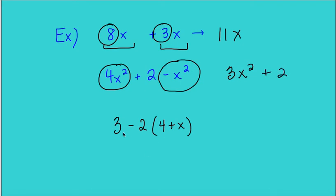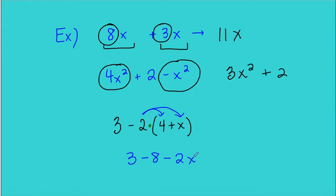Here I've got to use the distributive property first, because this is being multiplied — I have to use proper order of operations. I can't subtract the 3 and the 2 before I multiply the negative 2 to the 4 and to the X, giving me 3 minus 8 minus 2X. Now the like terms are actually the constant terms, so 3 minus 8 gives me negative 5 minus 2X.